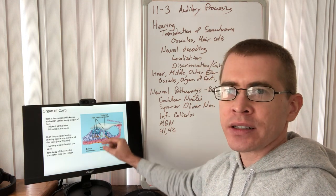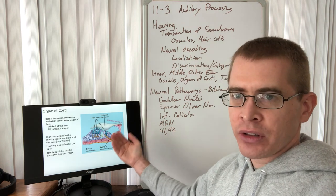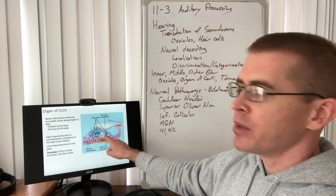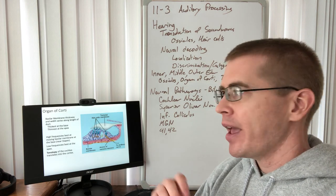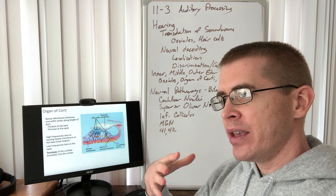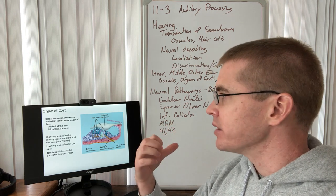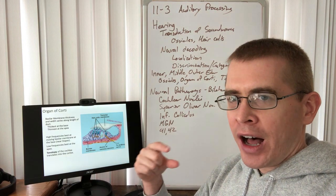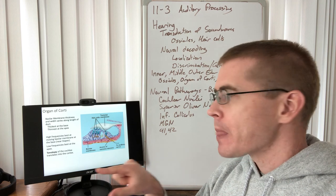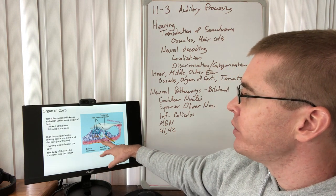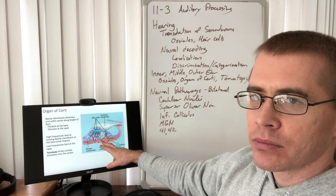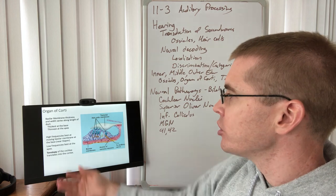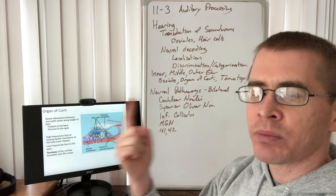The basilar membrane is thicker or thinner in different locations. At the apex it is thinnest, and at the base it is thickest. High energy is needed to move a thick basilar membrane, so high energy correlates to high frequency. High frequencies move the basilar membrane most at the thick base; low frequencies move the thinner basilar membrane most at the apex. There is a tonotopy within this spiral cochlea.